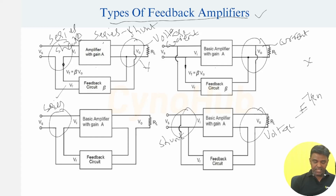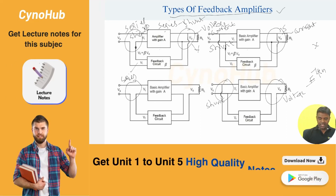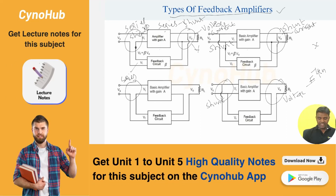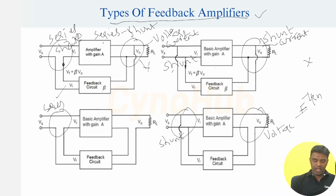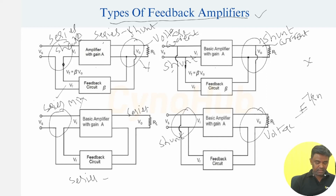Then we have shunt mixing with shunt sampling — this type of feedback amplifier is called the shunt-shunt feedback amplifier. The first classification is series-shunt feedback amplifier, the second is shunt-shunt feedback amplifier. The third classification has series mixing with series sampling, giving us the series-series feedback amplifier.